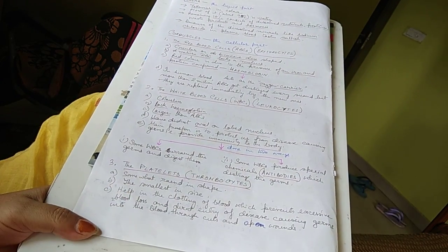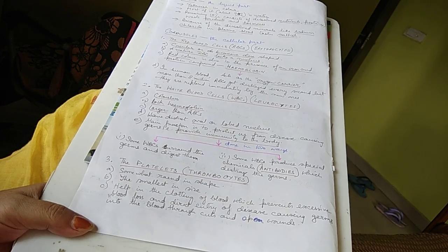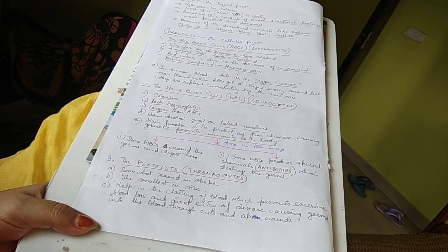Platelets or thrombocytes are necessary. There are two functions: blood loss is not increased and germs are prevented from entering through cuts and open wounds.